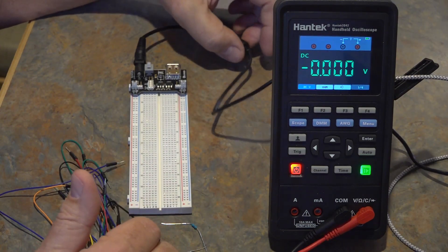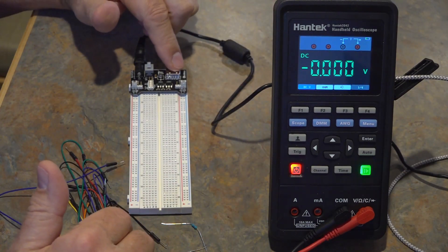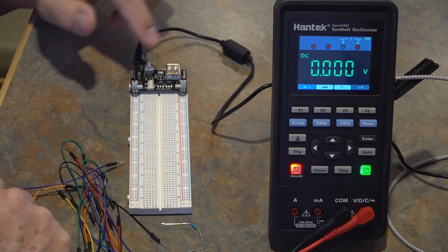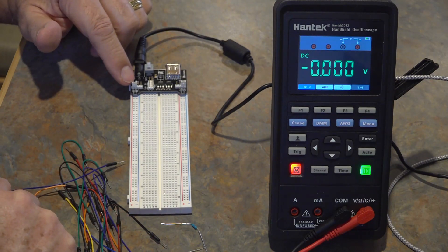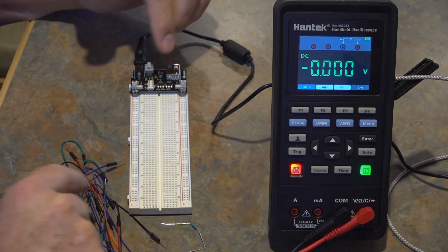The first thing we're going to do is make sure that the header board jumpers are set to 3.3 volts on one side and 5 volts on the other.